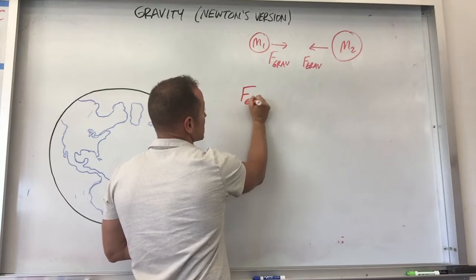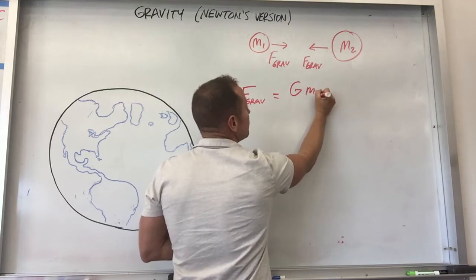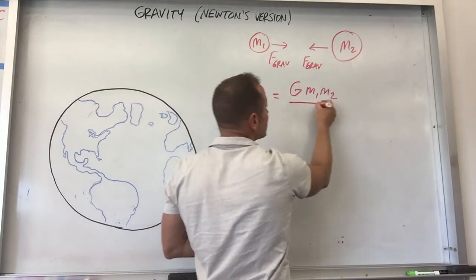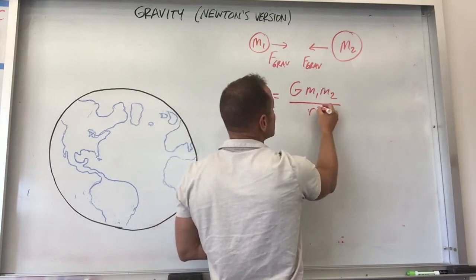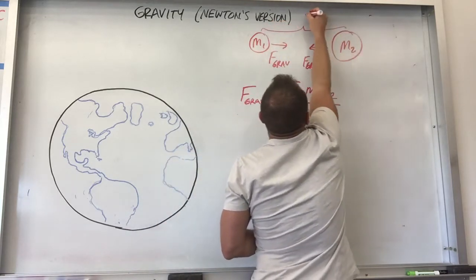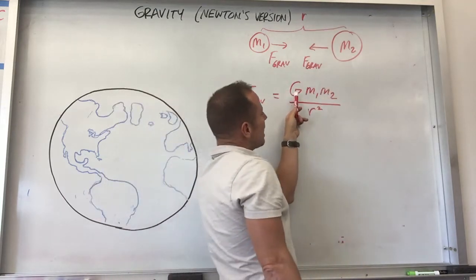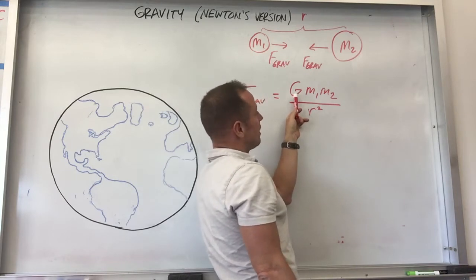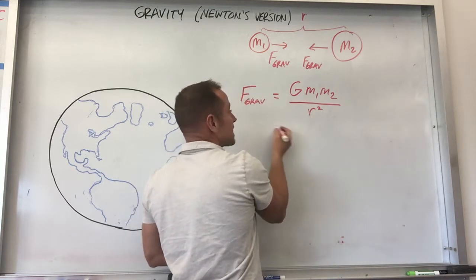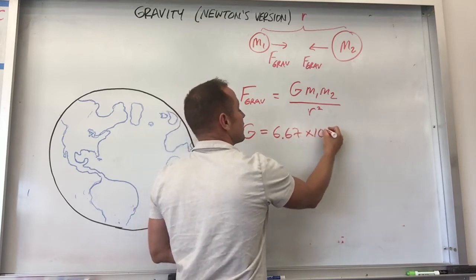Newton's law of gravitation looks like this. There's a constant G, and then it depends on the two masses — so if either of the two masses gets bigger, the force goes up — divided by the distance between them squared. So R is the distance between them. In standard SI units, G is 6.67 times 10 to the minus 11. Very tiny.